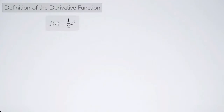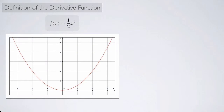Let's look at the function f of x equals one half x squared. Here's a graph of this function — it's a parabola. We can calculate the derivative at any point a using the formula f prime of a equals the limit as h approaches 0 of f of a plus h minus f of a all over h. Before we do that, let's take a look at what we imagine the derivative might be at several different points.